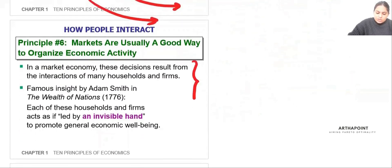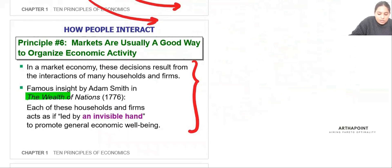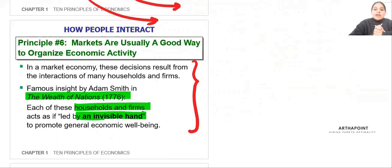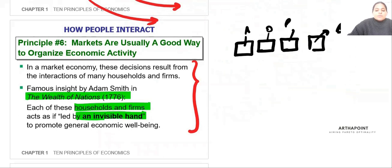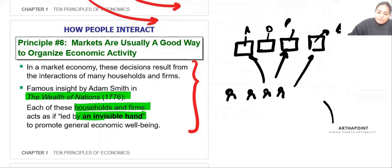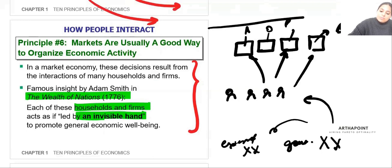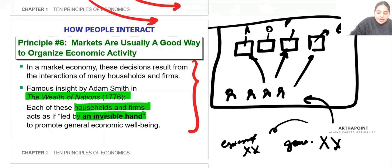Adam Smith, the father of economics, wrote The Wealth of Nations, in which he said that households and firms are led by an invisible hand. If you give people a market — say, four stalls selling apples, oranges, pizza, and books — buyers and sellers can go ahead and transact without any government intervention or external intervention. They are led by an invisible hand.